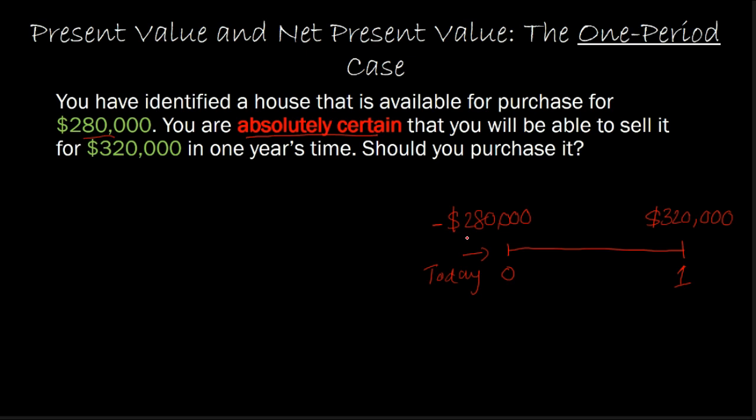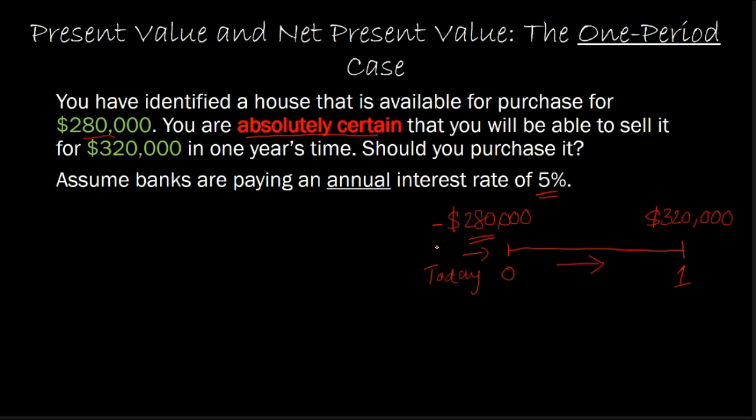More specifically, when you are going to spend $280,000 today, you will be losing out on anything else that you could have done with this $280,000 while you're waiting this one year to get your $320,000. Let's solidify that by making an additional assumption that banks right now are paying an annual interest rate of 5%. So now this means that if you did not spend this $280,000 to purchase the house, you could have alternatively invested your money and gotten 5% rate of return in one year.